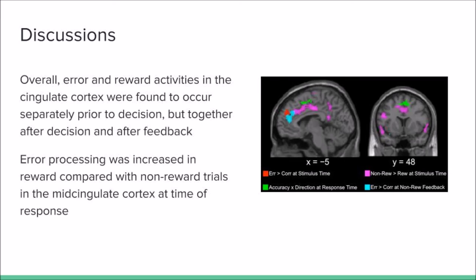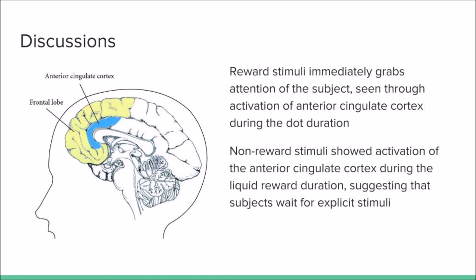During the reward trials, there was increased error processing activity in the mid-cingulate cortex. It was seen during the experiment that time of activation of the anterior cingulate cortex was immediate for reward stimulus, which were the left moving dots.